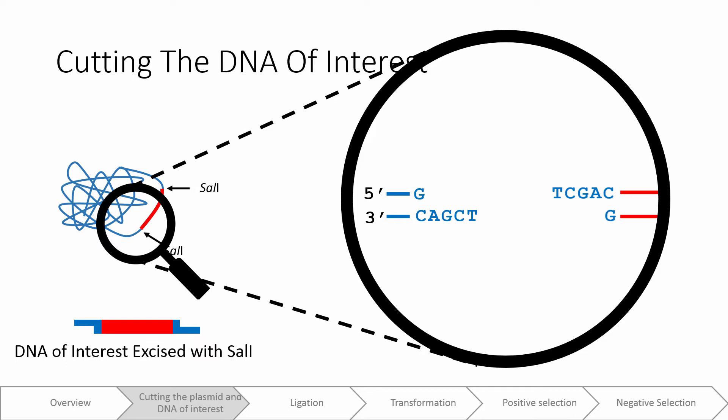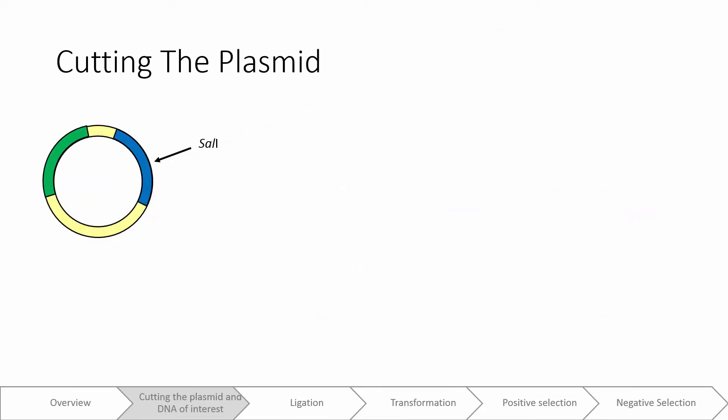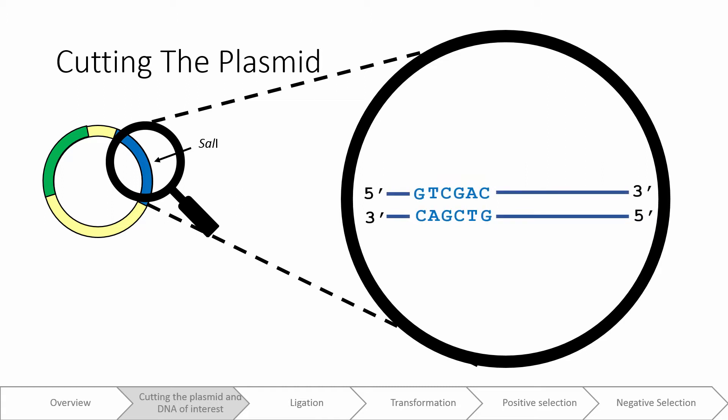Here is a schematic of what our excised DNA may look like if the DNA of interest was successfully cut at both Sal1 sites. A similar process is occurring when we cut the plasmid with Sal1. Again, here is a magnified view. Again, Sal1 will cut at the same sequence, leaving behind a 5' overhang.